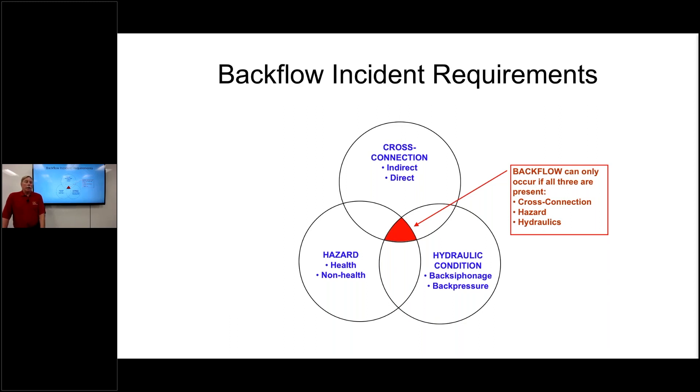We needed to have the hazard. And not only that, we also needed to have the hydraulic condition, something to actually move that hazardous material into the drinking water system. So as indicated in this Venn diagram, that red area in the middle is where those three issues coincide. And it only is at that point that we truly get a backflow incident that occurs. This is where we find many times people don't understand that the three parts of this Venn diagram have to happen concurrently for a backflow incident.